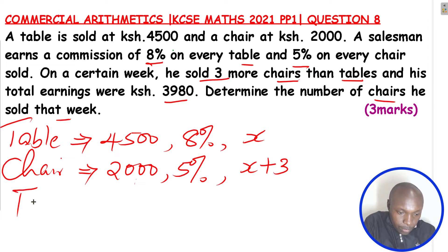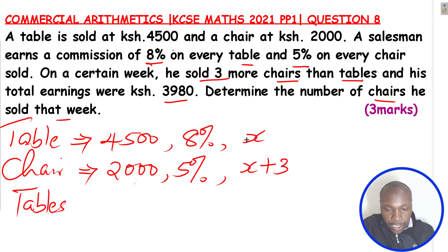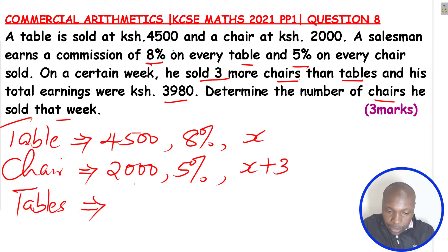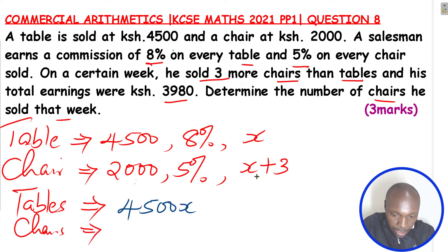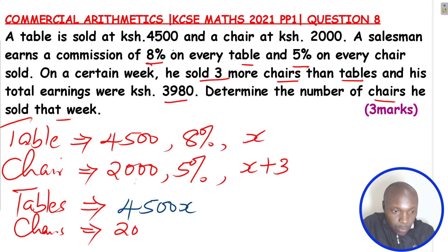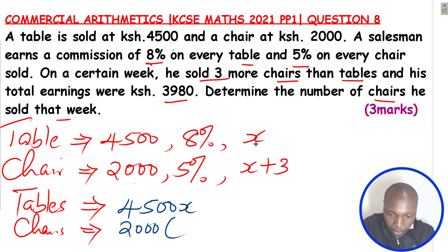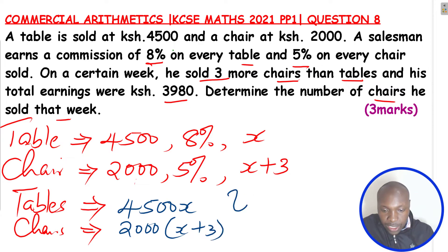Let's start with the tables. The tables are x in number, and if each costs 4,500, the total amount from tables is 4,500x. For the chairs, the number of chairs is x plus 3 and each chair costs 2,000, so the total amount from chairs is 2,000 times (x plus 3). These represent the total amounts obtained before applying the commission.